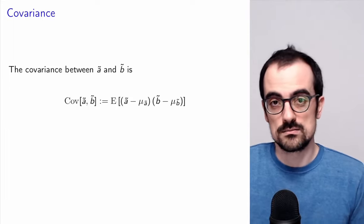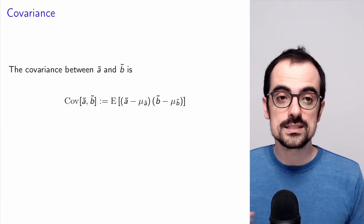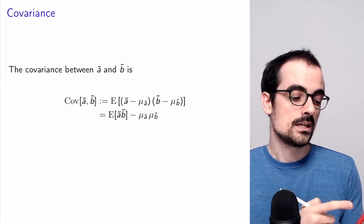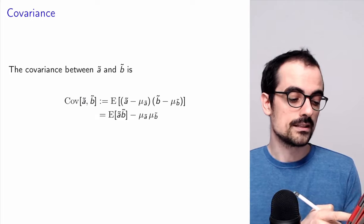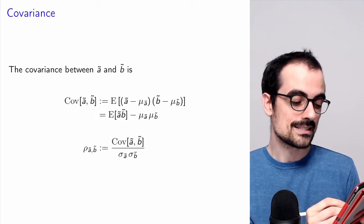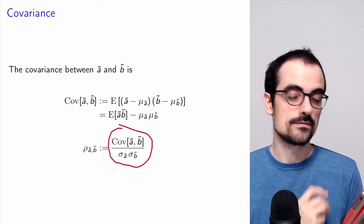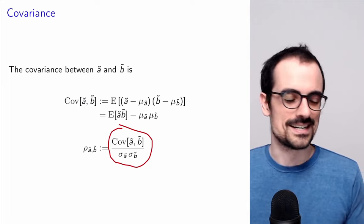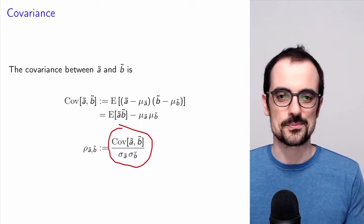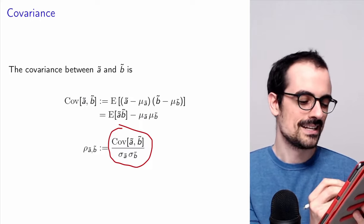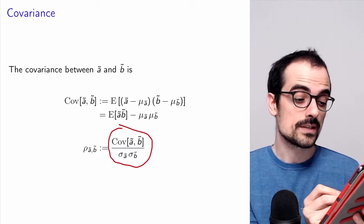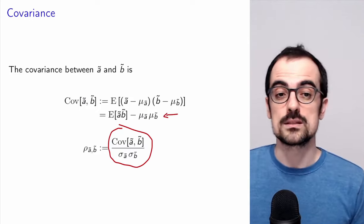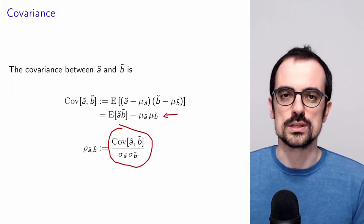In many books you will see the covariance defined first, and then the correlation coefficient is defined as a normalized version of the covariance. It turns out that by linearity of expectation, you can write the covariance as the mean of the products minus the product of the means, and we often use that expression when computing things.